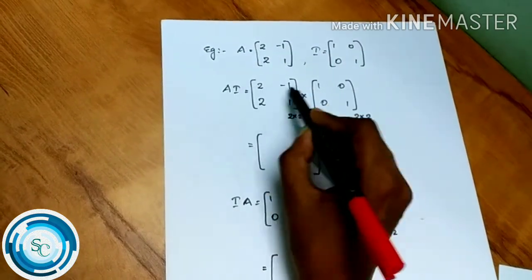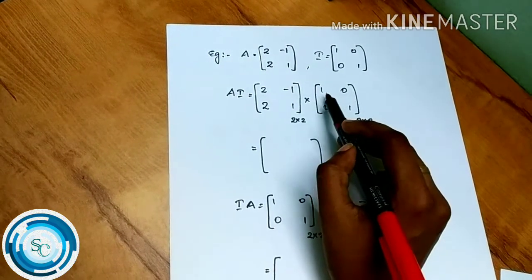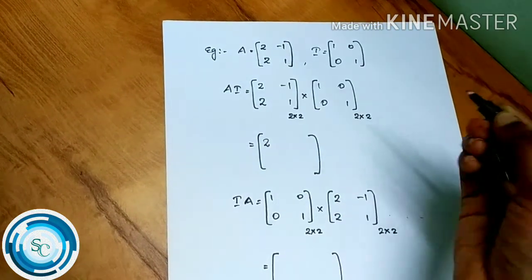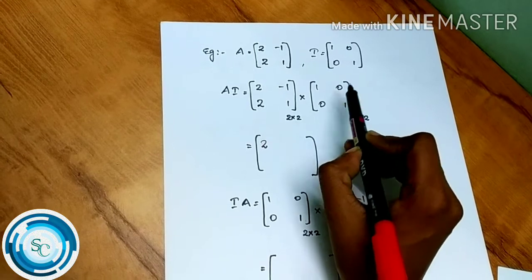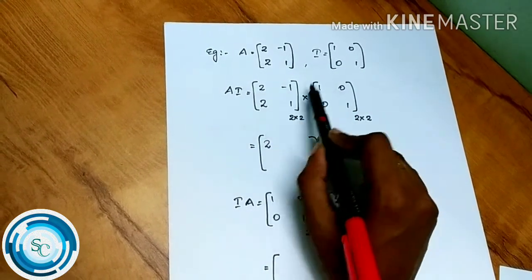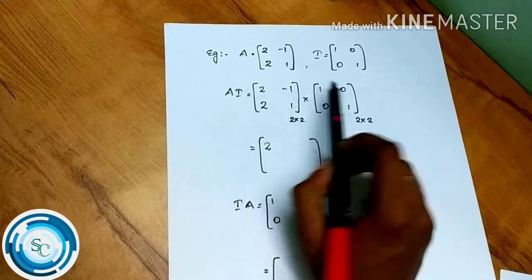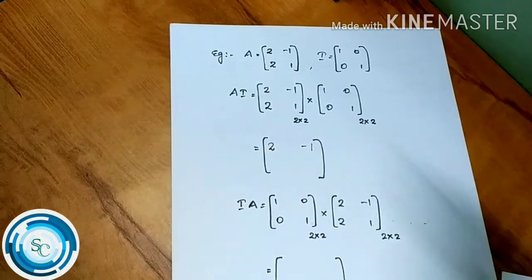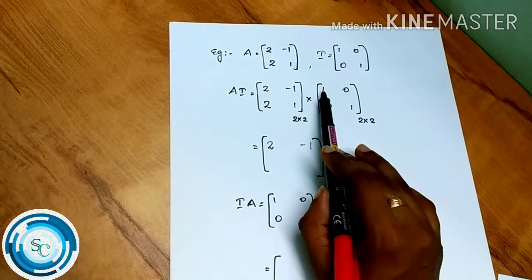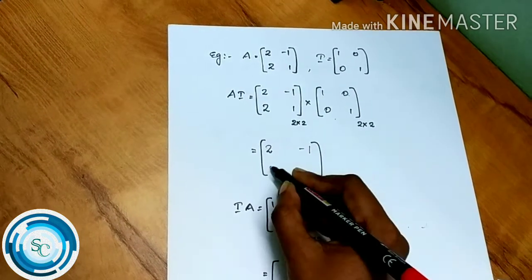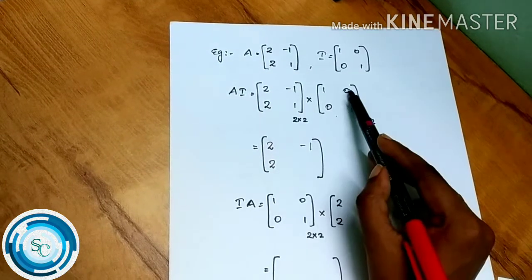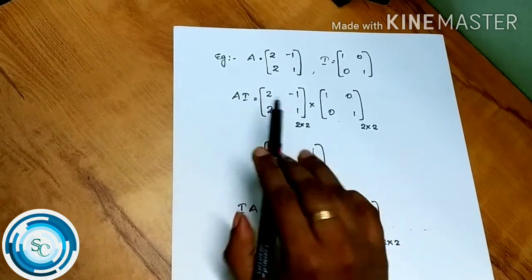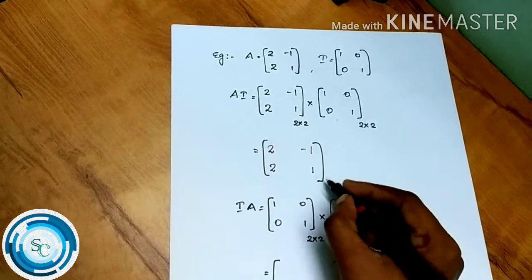The identity matrix I_2 is 1, 0, 0, 1. We compute: 1×2 + 0×2 = 2; 1×(-1) + 0×1 = -1; 0×2 + 1×2 = 2; 0×(-1) + 1×1 = 1. The result is 2, -1, 2, 1, which equals A. That is A, a 2×2 matrix.